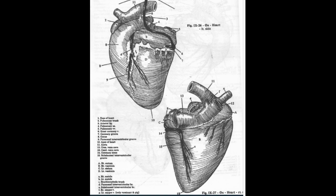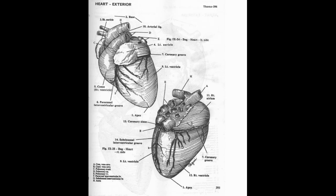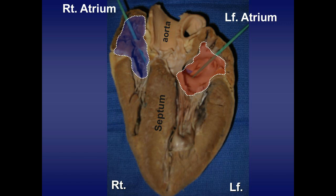The right ventricle is not on the right side of the heart but faces cranially, and similarly the left ventricle faces caudally. The left atrium is the chamber into which the pulmonary veins empty, so the left atrium receives oxygenated blood from the lungs through pulmonary veins.